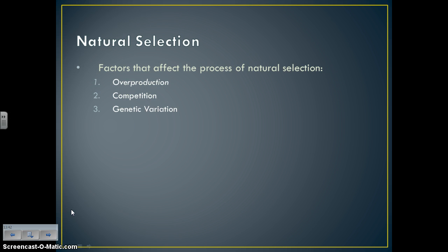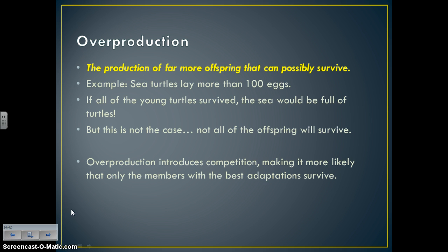There are three factors that affect the process of natural selection: overproduction, competition, and genetic variation. Overproduction is simply the production of far more offspring than can possibly survive. For example, sea turtles lay more than 100 eggs. If all the young sea turtles survived, the sea would be full of sea turtles — obviously that's not the case, and not all offspring will survive.